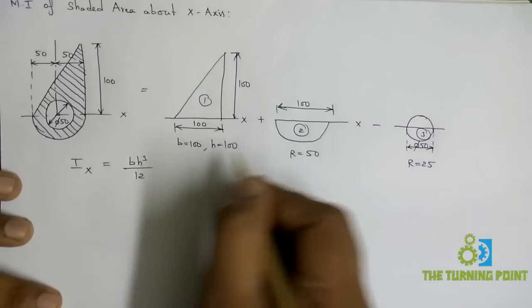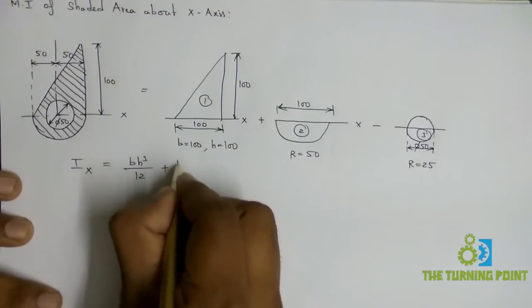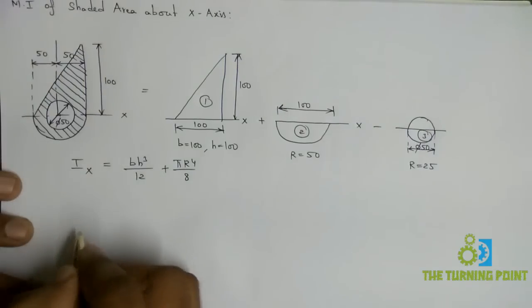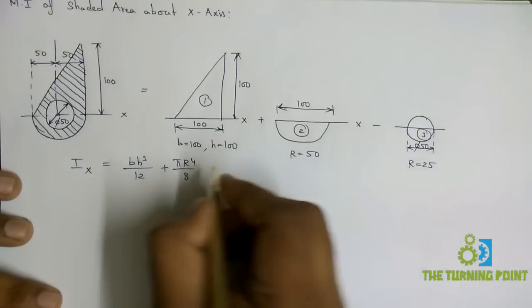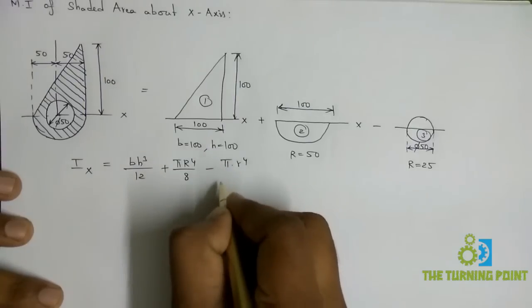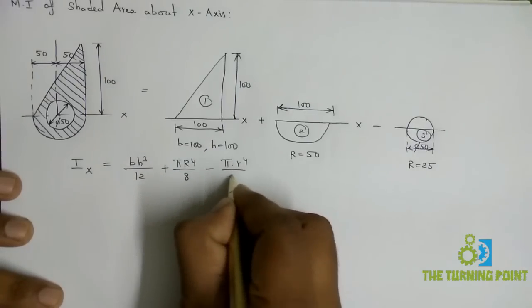For semi-circle it is πr⁴/8. For the complete circle, minus πr⁴/4.